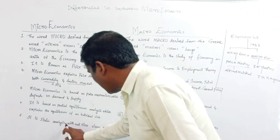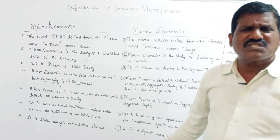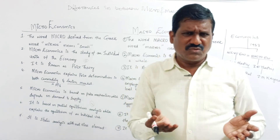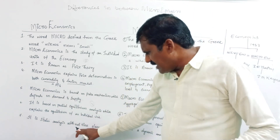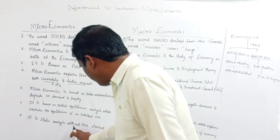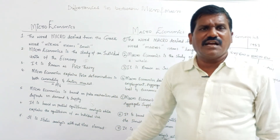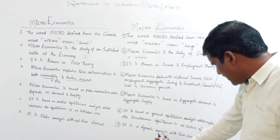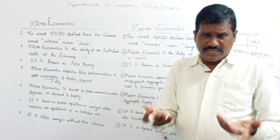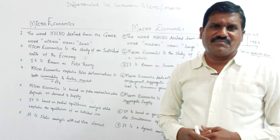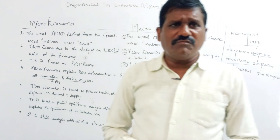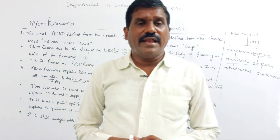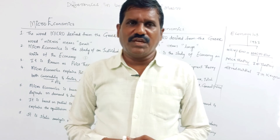Microeconomics is a static analysis without time elements — demand, supply, and market are analyzed at a constant point in time. Macroeconomics is a dynamic analysis — it changes with time elements, so time changes are accounted for. These are the differences between microeconomics and macroeconomics. Thank you very much.